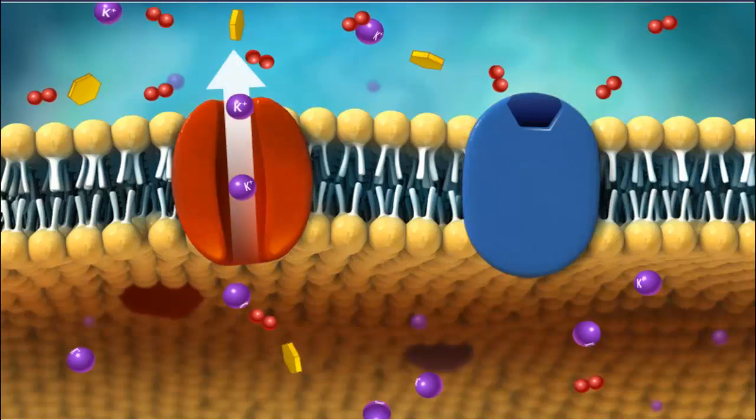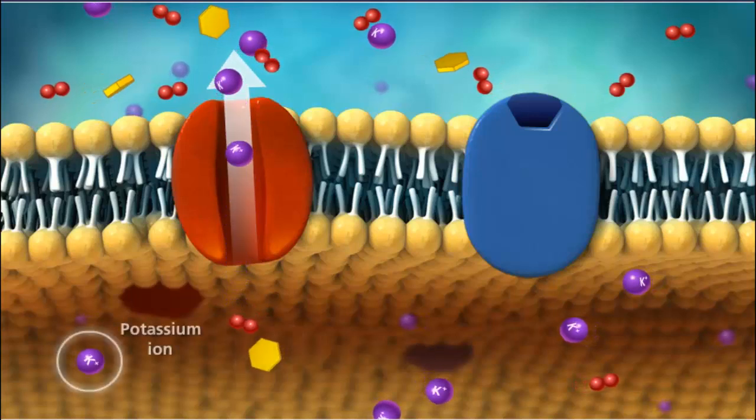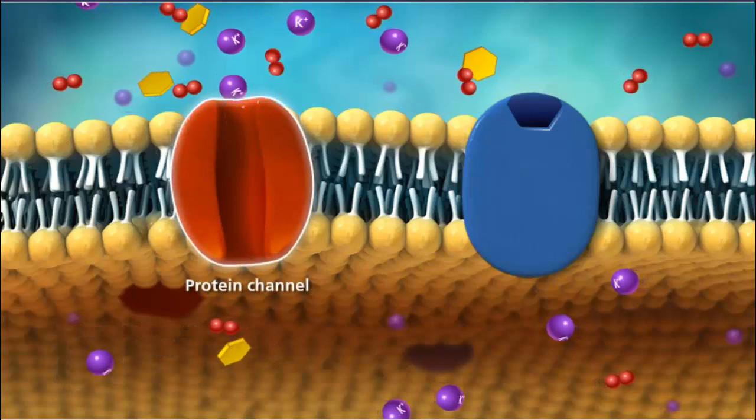Through facilitated diffusion, larger molecules, polar molecules, and charged ions use channel proteins embedded in the bilayer.